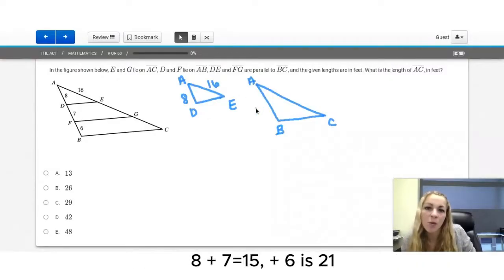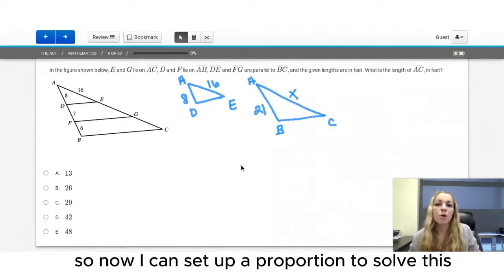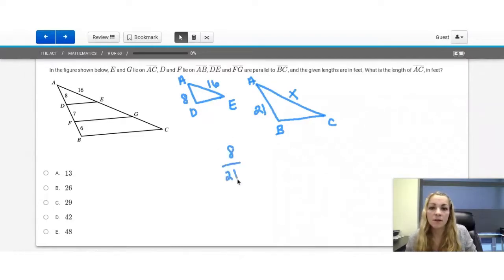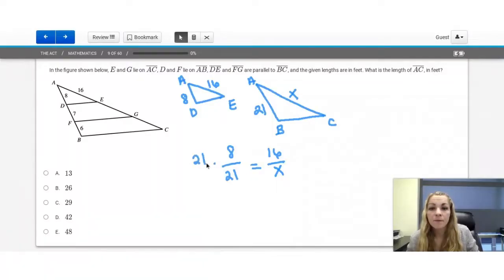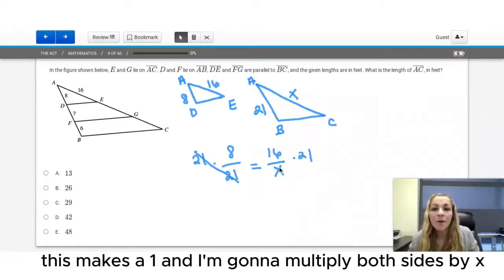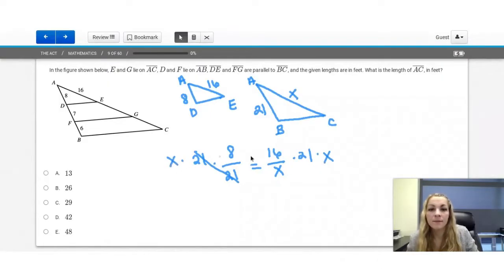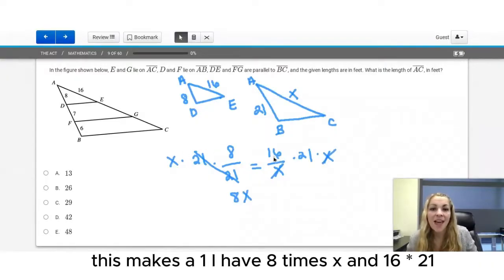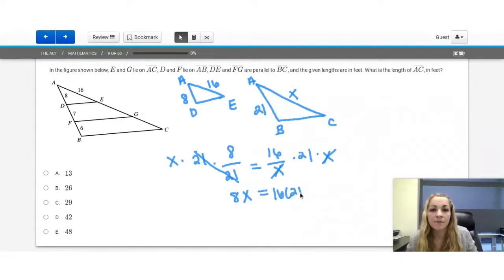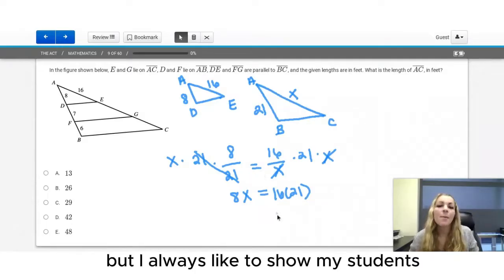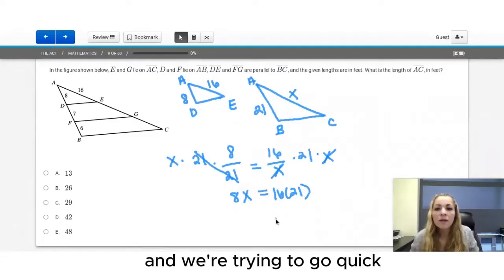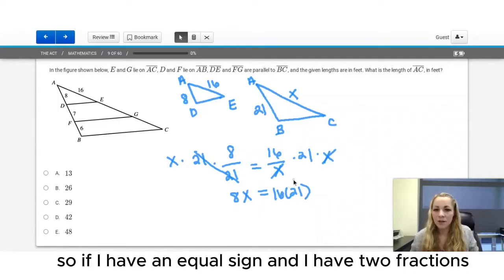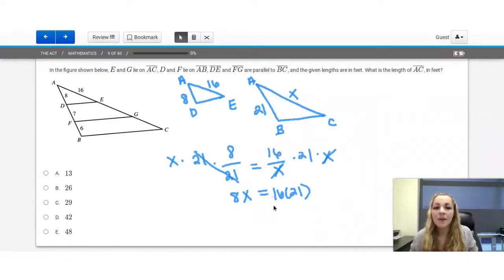Now this length of AB is 8 plus 7 plus 6, so I add those three together. 8 plus 7, 15 plus 6 is 21. My goal is to find AC, so now I can set up a proportion to solve this. I can say 8 is to 21, as 16 is to X. I'm going to use some inverse operations to figure this out. I'm going to multiply both sides by 21. This makes a 1, and I'm going to multiply both sides by X. This makes a 1. I have 8 times X and 16 times 21. Some of you like to jump right here and use cross multiplication, but I always like to show my students why cross multiplication works, and it's because of inverse operations. But I know this is the ACT, and we're trying to go quick. So if I have an equal sign and I have two fractions, I can do 8 times X equals 21 times 16.